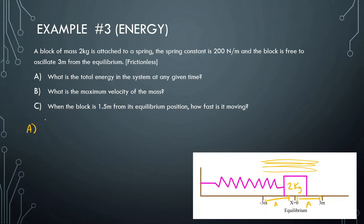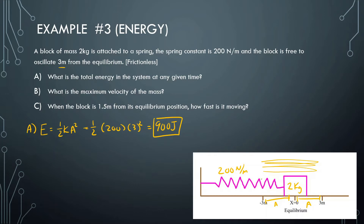We should know that if we can find the total energy at the amplitude, we can find the total energy the whole time. So if we do one-half kA squared — one-half times k being 200 newtons per meter, times the amplitude 3 meters squared — that gives us 9 times 200 times 0.5, and we should get around 900 joules. So at every single moment this is oscillating, it has 900 joules of mechanical energy.